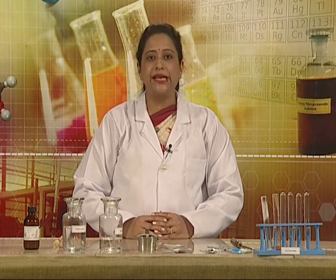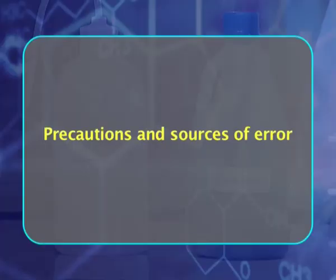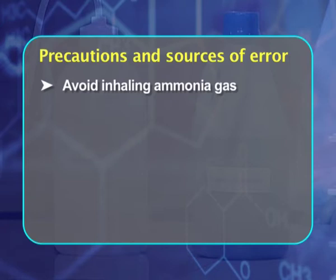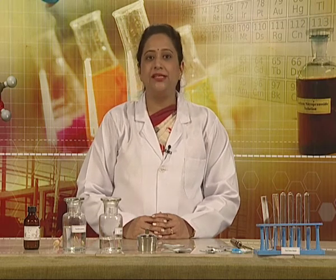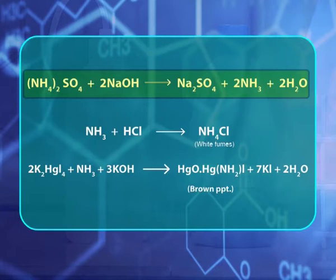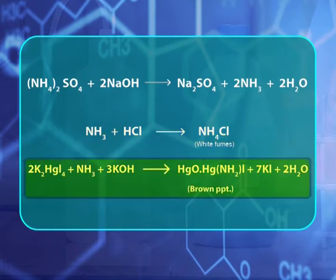Today we have performed the test for identification of the ammonium cation in the given salt. Some precautions and sources of errors: avoid inhaling excess ammonia gas, and we must add some drops of potassium hydroxide solution in Nessler's reagent. To recapitulate: salts of ammonium ions, when heated in the presence of NaOH solution, give ammonia gas, which combines with hydrochloric acid to form white fumes of ammonium chloride. When this gas is passed through Nessler's reagent, a brown precipitate is formed, which confirms the presence of ammonium ions.